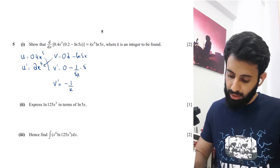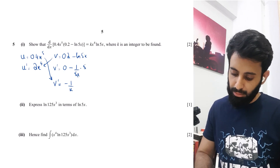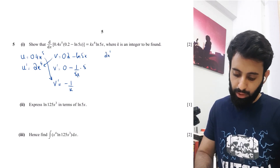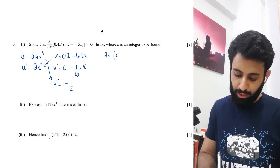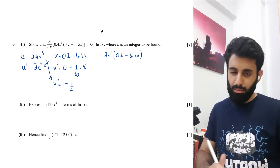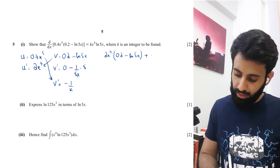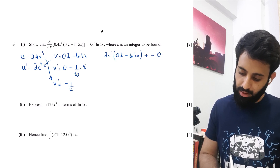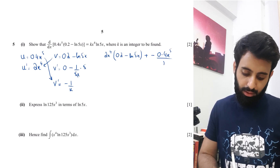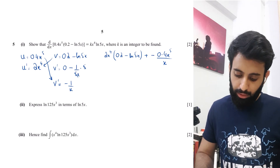Product rule gives v·u' + u·v'. So v·u' means multiplying (0.2 minus ln5x) by 2x^4 — write it out first before expanding. Make sure you use the space efficiently so you don't run out of room before solving the question. Then u·v' gives 0.4x^5 times (1/x), which is 0.4x^5 / x, minus overall.